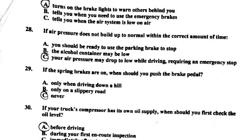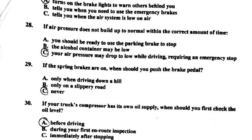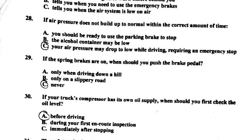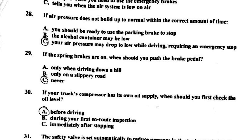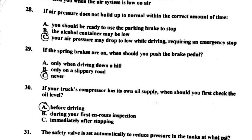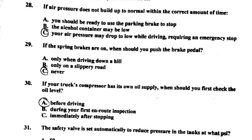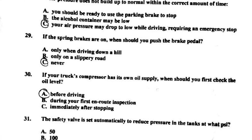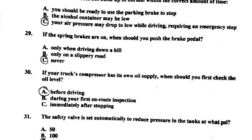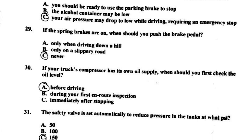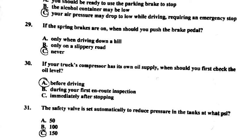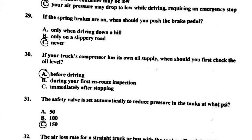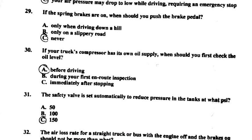Number twenty-seven: the stoplight switch — A, turns on the brake lights to warn others behind you. Number twenty-eight: if air pressure does not build up to normal within the allotted amount of time — C, your air pressure may drop too low while driving, requiring an emergency stop.